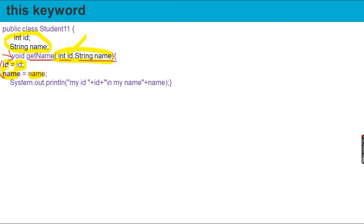The class is called int, and the name is also called int. When the local variable and the class variable share the same name, it creates an ambiguity and it creates confusion for the compiler.